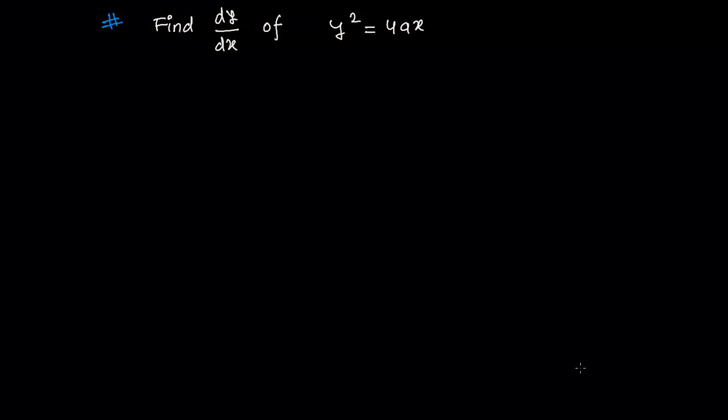Since few videos we are learning to find out the derivative of equations, and here is another type of implicit differentiation example. Here we need to find out the dy by dx of this function y squared equals to 4ax.